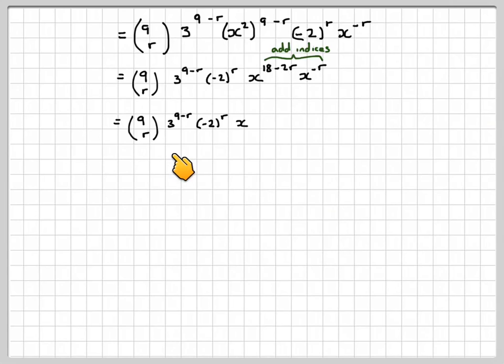So we get 9cr, 3 to the 9 minus r, minus 2 to the r, and we're going to have x to the 18 minus 3r. Now we need this to be equal to 0, so therefore we have x to the 0, and we'll get 1, and we'll be left with numbers. So obviously r would have to be equal to 6, because 18 minus 3 times 6 is equal to 0.